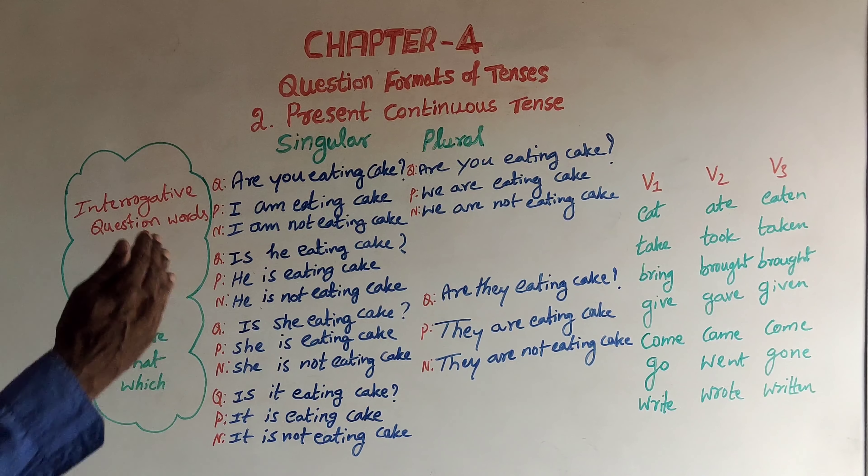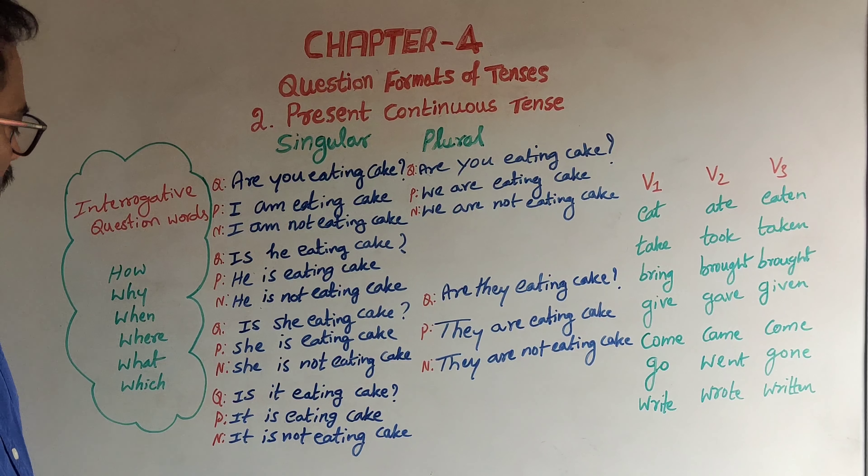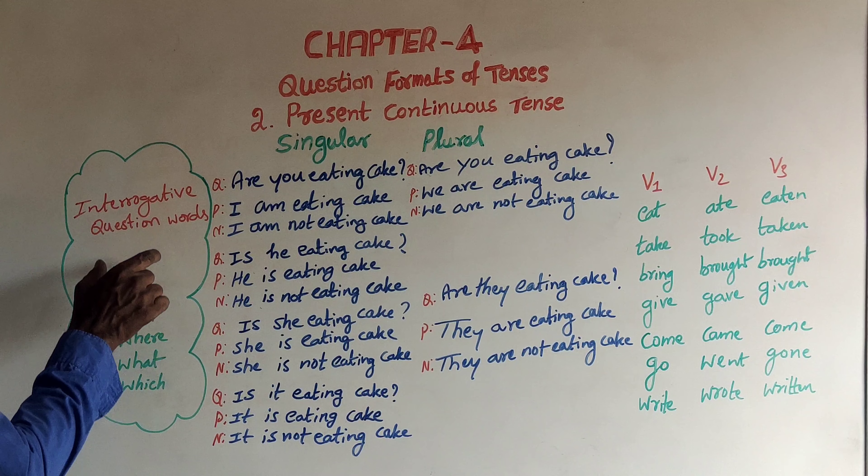Now, let us go to interrogative question words. Yahu gilinu nao ya avari te apply maadat eku kanta yelitthi nahi. Nodhi? How are you eating cake? Why are you eating cake? When are you eating cake? Where are you eating cake? What kind of cake are you eating? Which cake are you eating? I think, idai rithi hagi, yella sentence ni apply maadat eku practice maadat eku.